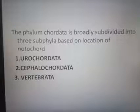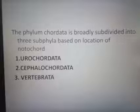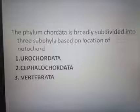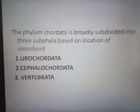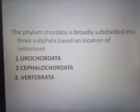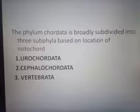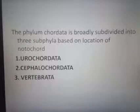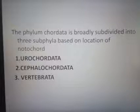The next one is Cephalochordata. Here the notochord extends throughout the length of the animal — from head to tail — unlike Urochordata where it is seen only in the tail portion. Cephalochordata is a fish-like marine animal. The example for the group Cephalochordata is Amphioxus, otherwise known as Branchiostoma. It is compulsory to read the NCERT biology textbook.